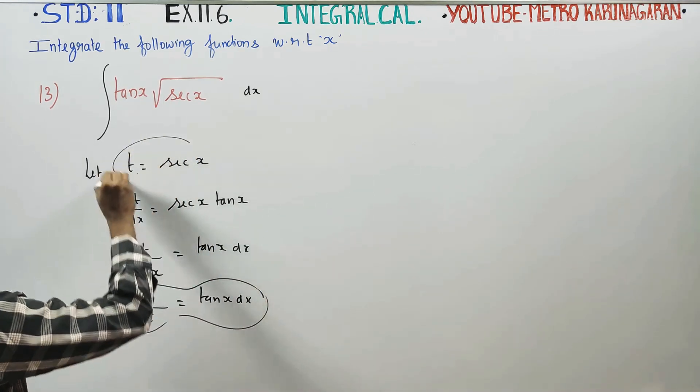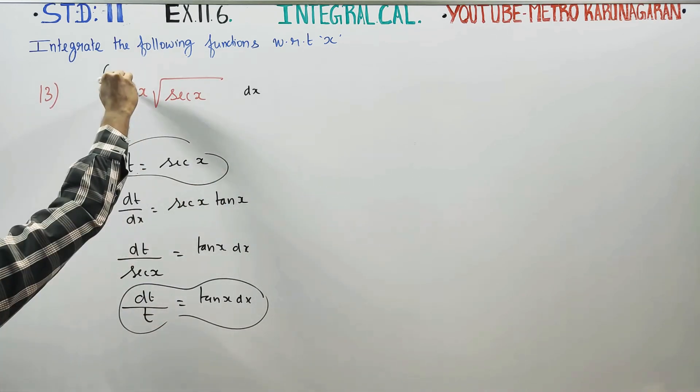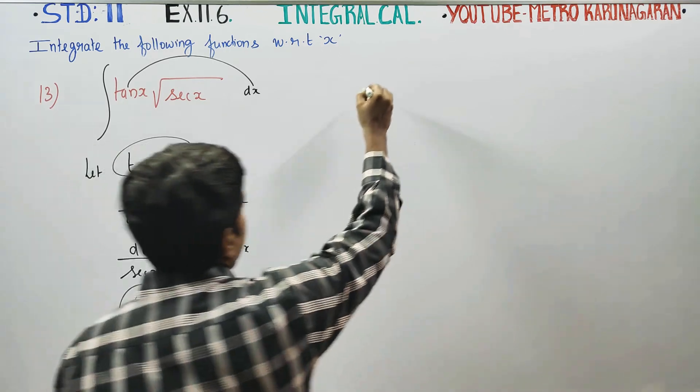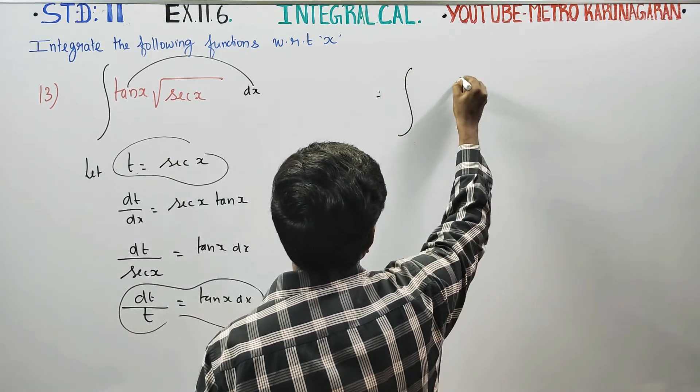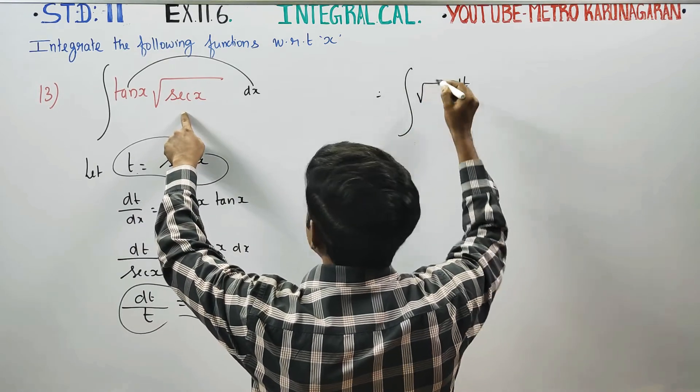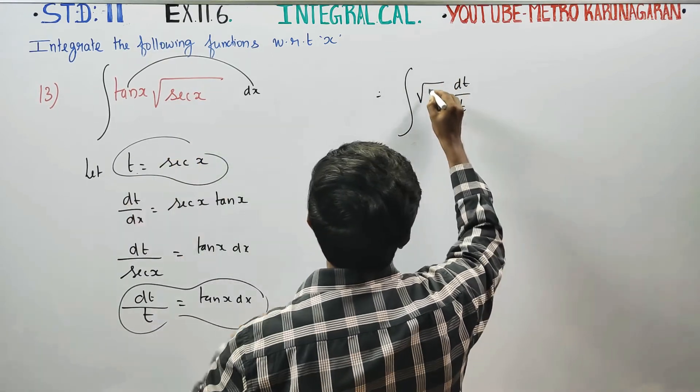I'm going to substitute this in the main sum. tan x dx is eliminated. I am going to use dt by t, root of secant x, secant x is t, root t.